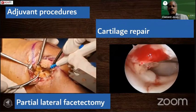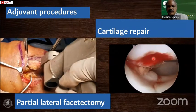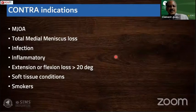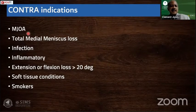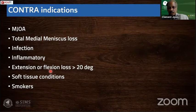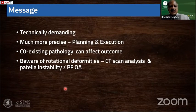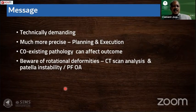Patients presenting with cartilage defects of the femoral condyle or patella can also undergo cartilage repair, so we have to be careful about all coexisting problems. When not to do an osteotomy: when there is significant medial joint osteoarthritis, near-total meniscal loss, suspicion of infection or inflammatory condition, extension or flexion loss more than 20 degrees, poor soft tissue quality, or the patient is a smoker — these cases must be approached very carefully.